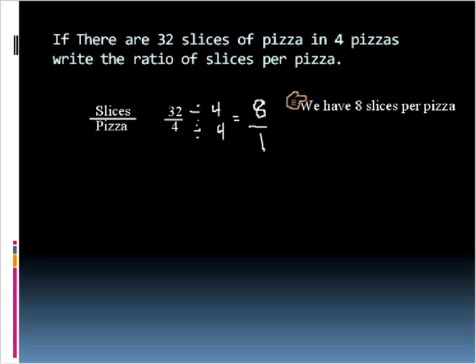We'll write that down. We have 8 slices per pizza. We know we have 4 pizzas, 8 slices per pizza. 4 times 8 is 32, so we can check our work kind of backwards like that if we want to.